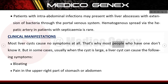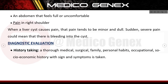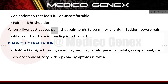Clinical manifestations: most liver cysts cause no symptoms at all, which is why most people who have one don't know it. But in some cases, usually when the cyst is large, a liver cyst can cause bloating, pain in the upper right part of the stomach or abdomen, an abdomen that feels full or uncomfortable, and pain in the right shoulder. When a liver cyst causes pain, it tends to be minor and dull; sudden severe pain could mean there is bleeding into the cyst.